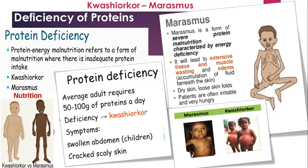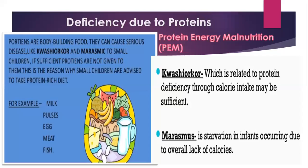Both kwashiorkor and marasmus occur due to protein deficiency. You can see the pictures showing stunted physical and mental growth. To treat protein deficiency, mostly in small children, food items rich in protein should be provided — milk, pulses, eggs, meat, and fish. Kwashiorkor is related to protein deficiency though calorie intake may be sufficient, while marasmus is a starvation condition occurring due to overall lack of calories.